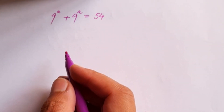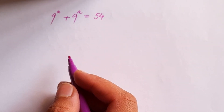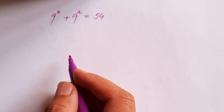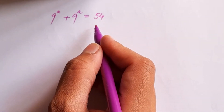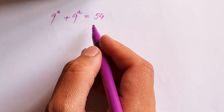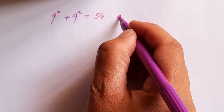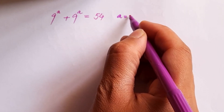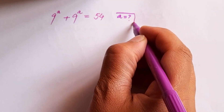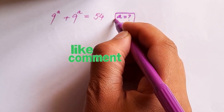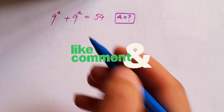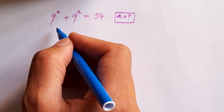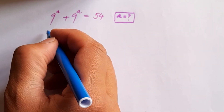Hello and welcome to another interesting math problem. 9 to the power a plus 9 to the power a is equal to 54, and we are required to find the value of a. Keep watching and do like and subscribe. Let's see the solution.